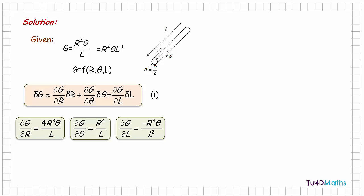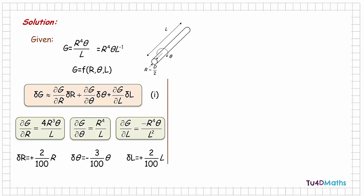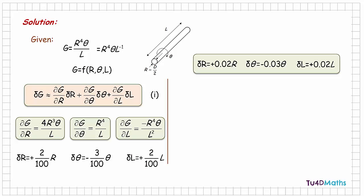We are told that r increases by 2%, so the small change in r is δr = (2/100) × r = 0.02r. θ decreases by 3%, so δθ = −(3/100) × θ = −0.03θ. And the length increases by 2%, so δl = (2/100) × l = 0.02l.